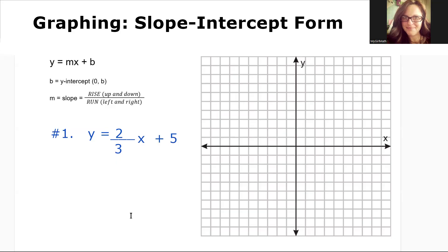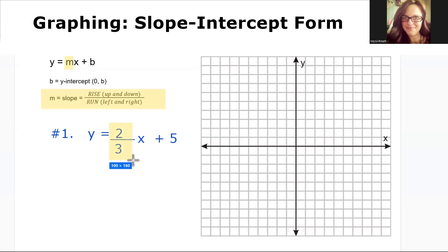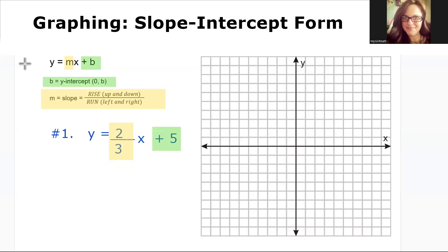This linear equation is in the form y equals mx plus b. Let's identify the slope and the y-intercept. The slope m is the number in front of x — two-thirds is our slope. The y-intercept is b, and our y-intercept is five.